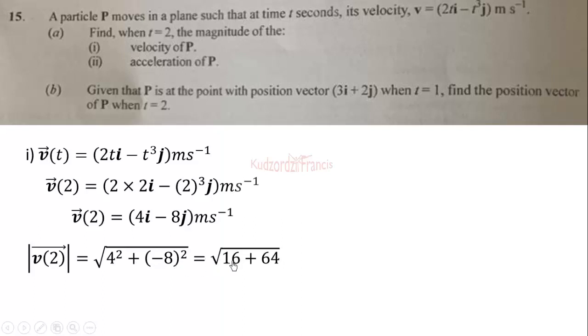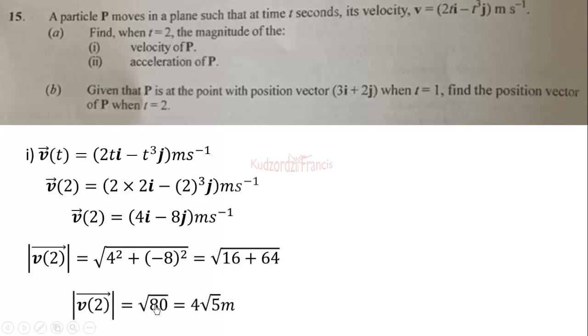The magnitude of this vector is given by the square root of 4 squared plus negative 8 squared, which equals the square root of 16 plus 64, giving us the square root of 80, or 4 root 5 meters per second.